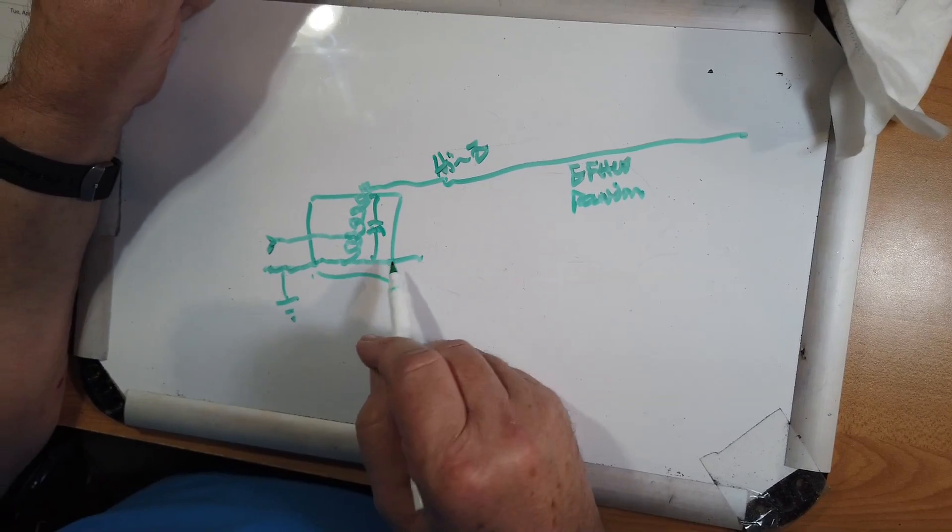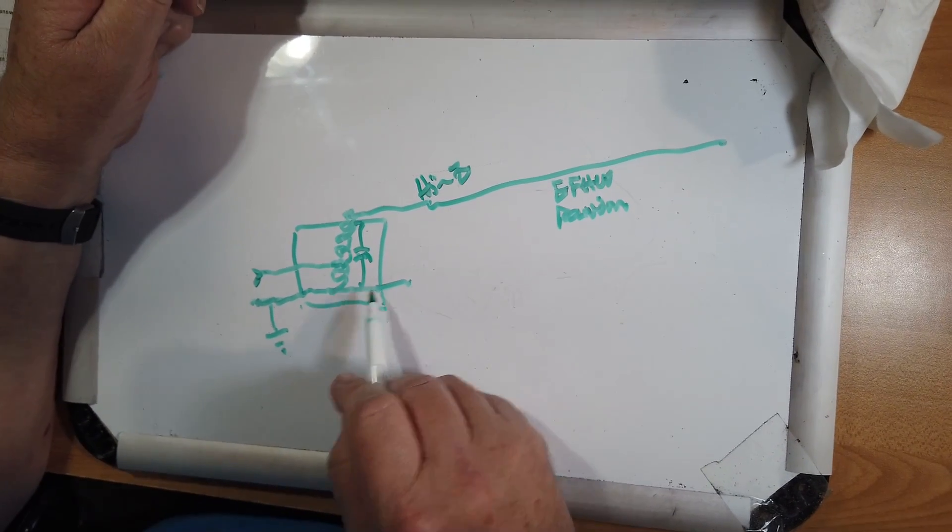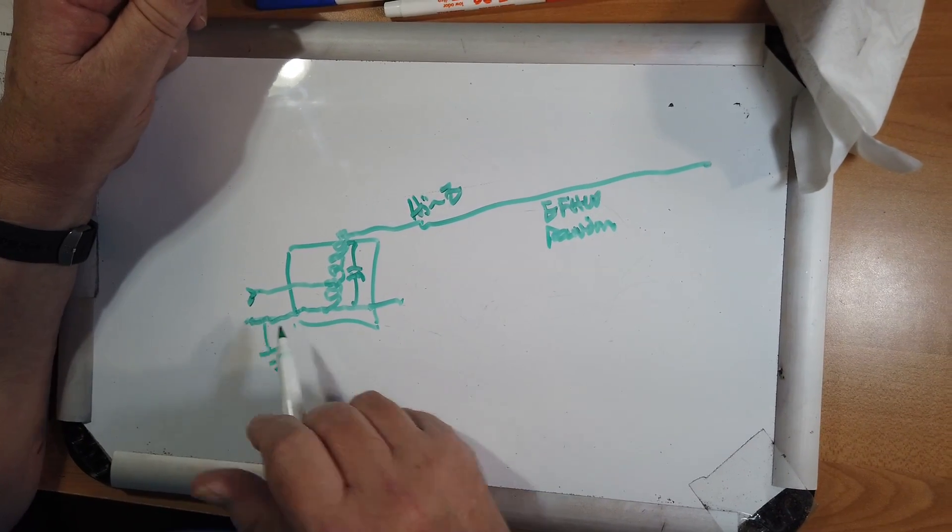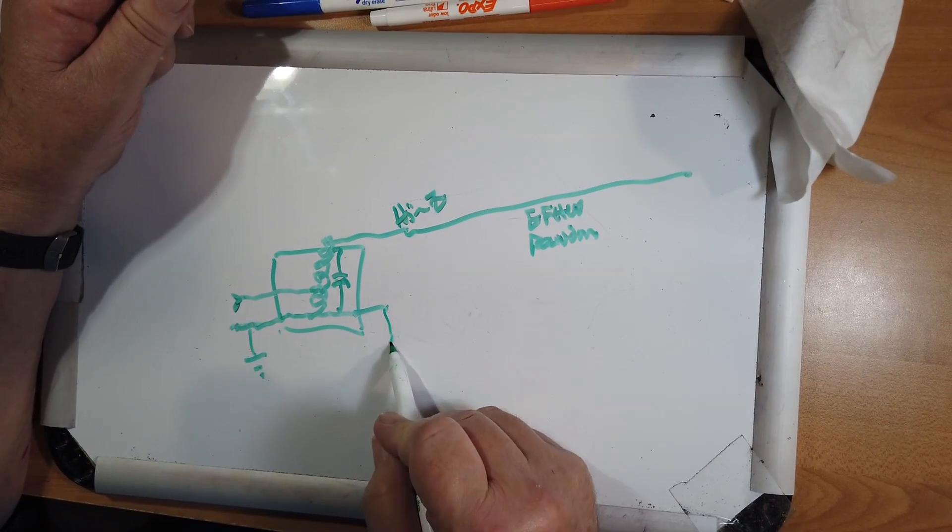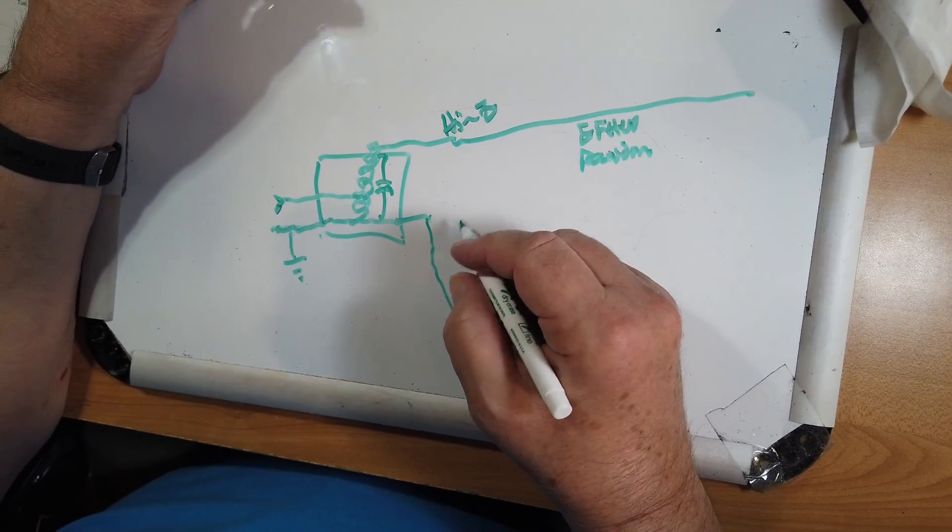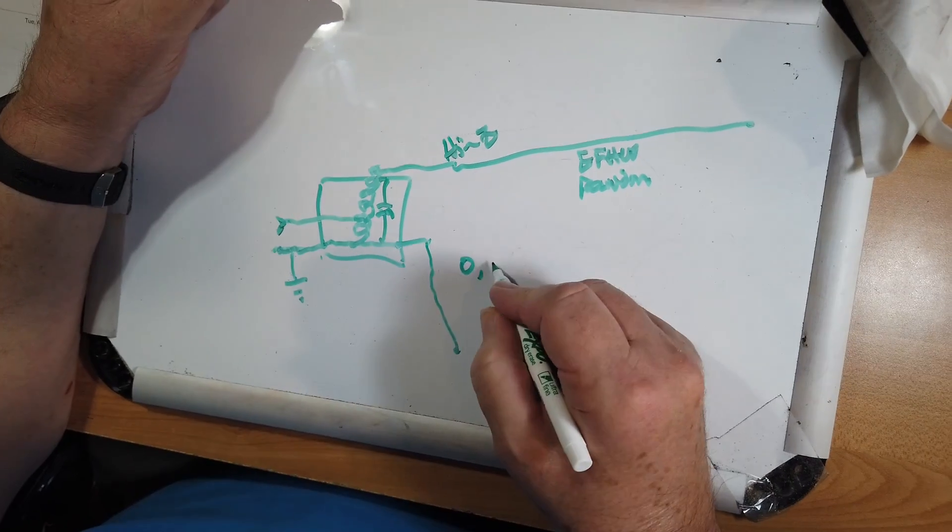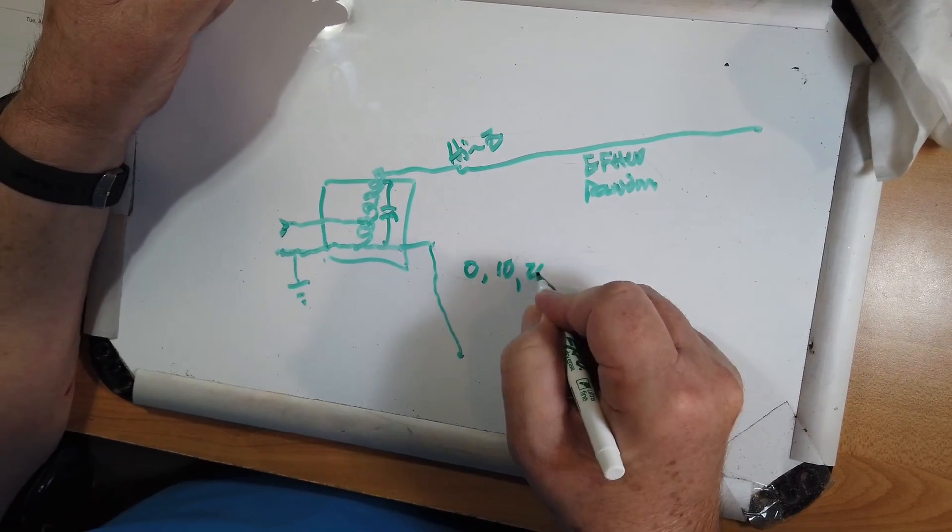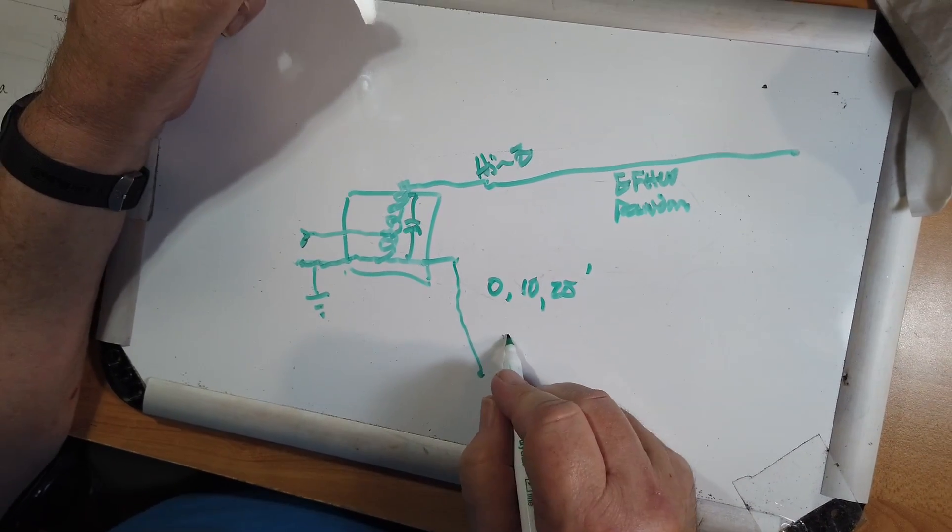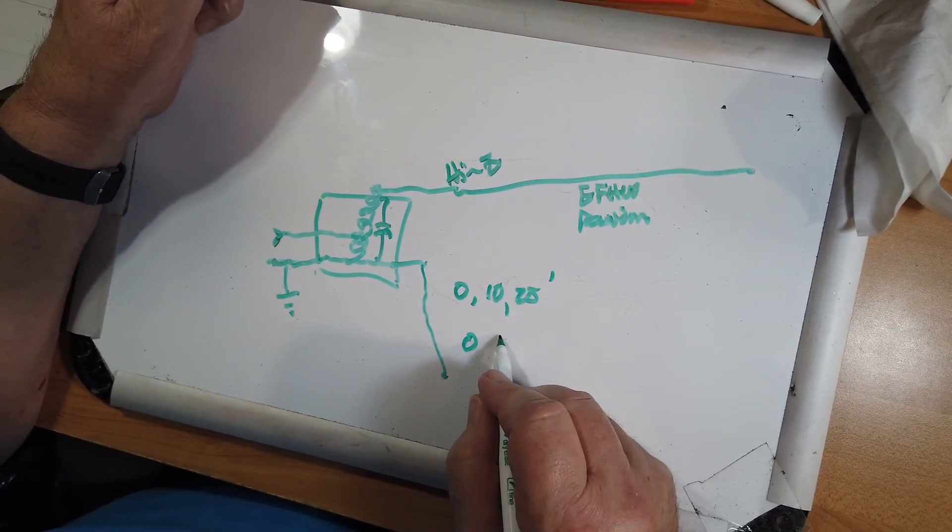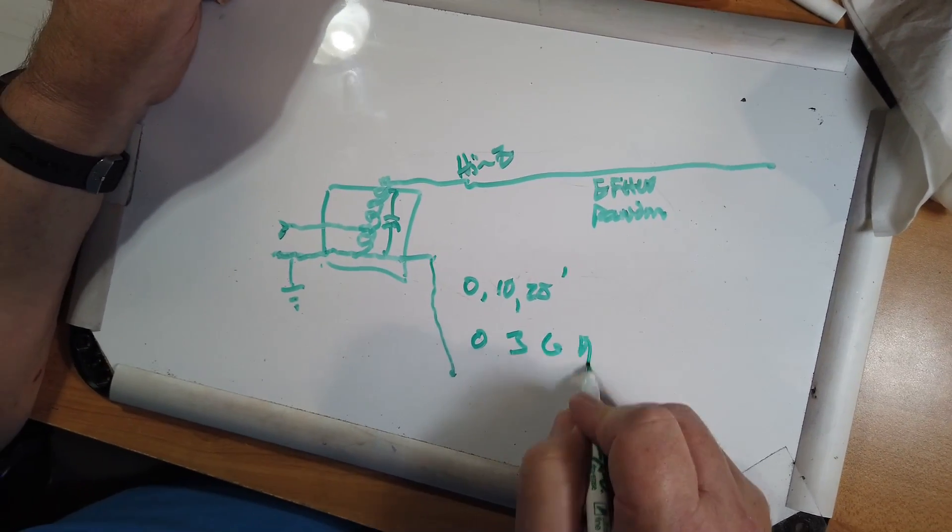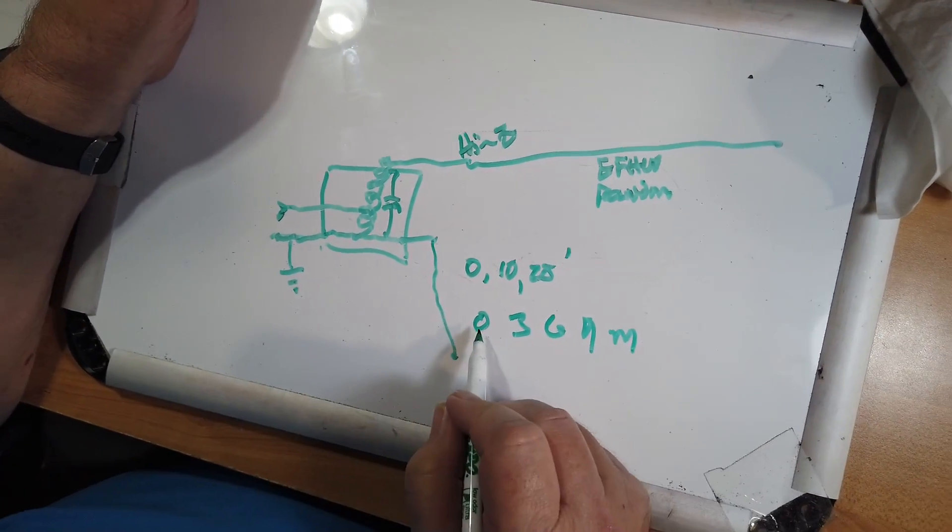Now, this is the connection he's talking about. Notice it's the same as the connection over here, and this is where you hang a counterpoise, usually a piece of wire. This piece of wire can be zero, say 10, 20 feet long. He's working in meters, so let's say 0, 3, 6, 9 meters.